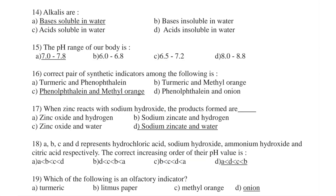Question number 14. Alkalies are: Option A — bases soluble in water, B — bases insoluble in water, C — acids soluble in water, D — acids insoluble in water. The right answer is Option A. Alkalies are the bases which are soluble in water — they dissolve themselves in water. Question number 15. The pH range of our body is: Option A — 7.0 to 7.8, B — 6.0 to 6.8, Option C — 6.5 to 7.2, Option D — 8.0 to 8.8. The right answer is Option A — 7.0 to 7.8.